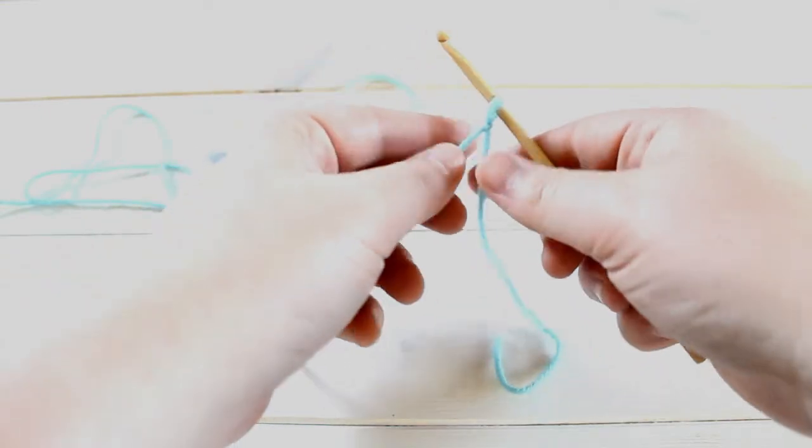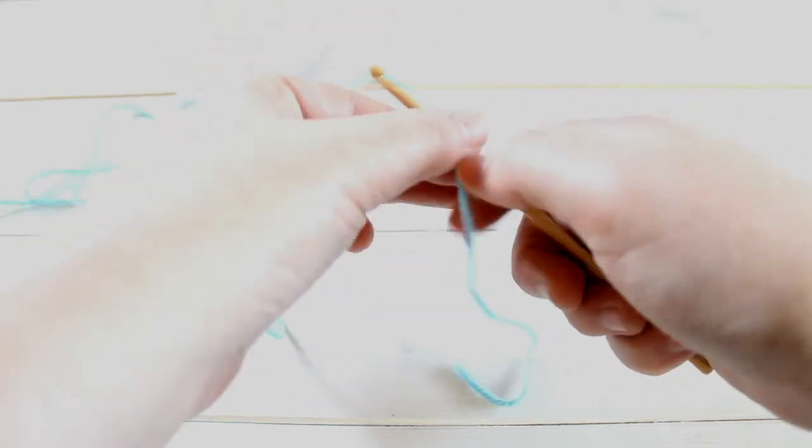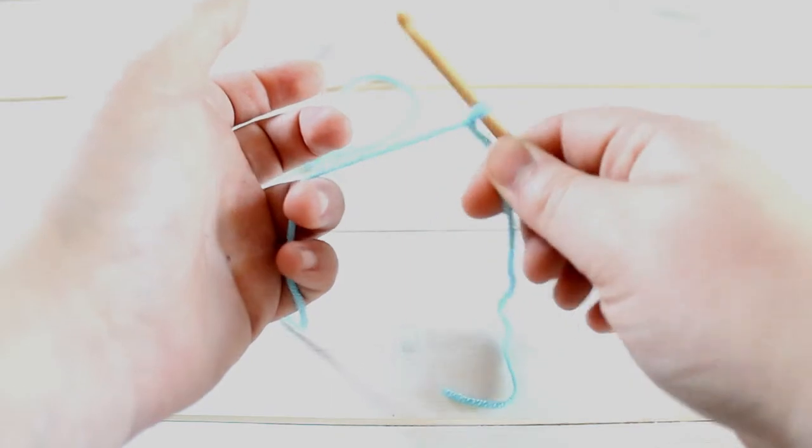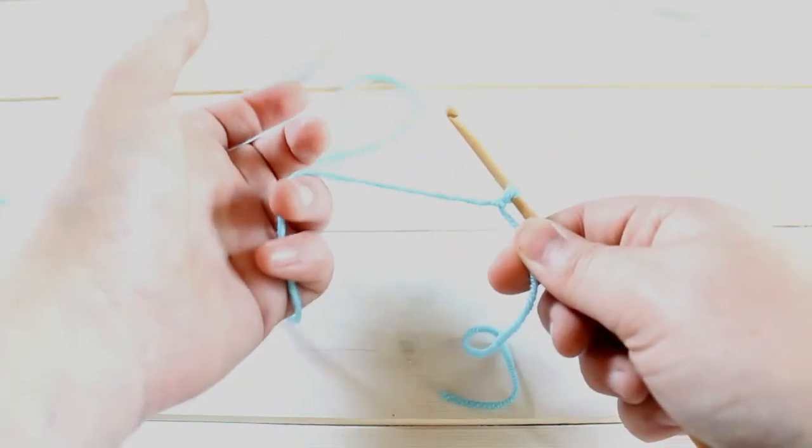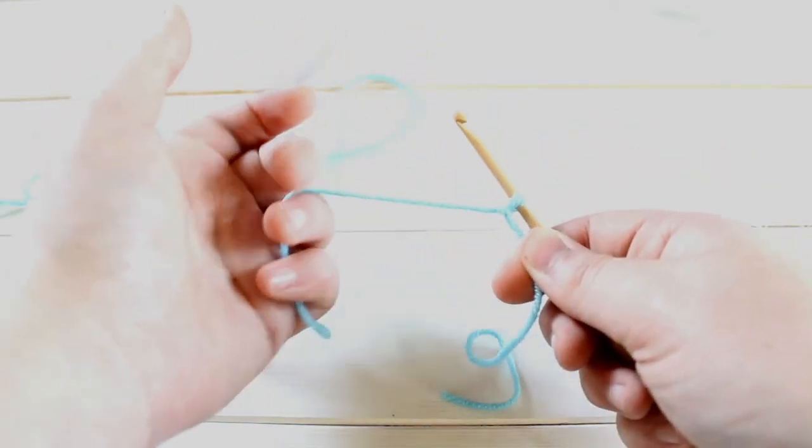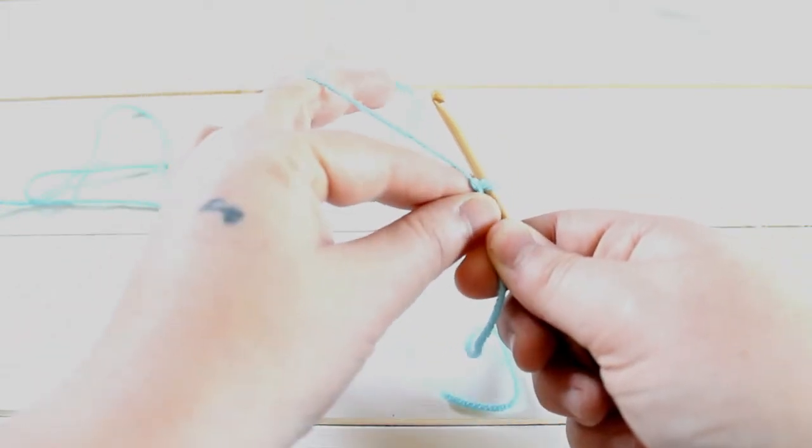To make a chain stitch, I'm going to be holding your hook in this hand or your dominant hand, and you're going to be tensioning the yarn with your other hand. So see, I'm holding the yarn like that.